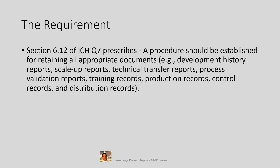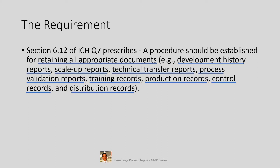Section 6.12 of ICH Q7 prescribes that a procedure should be established for retaining all appropriate documents. Examples include Development History Reports, Scale-up Reports, Technical Transfer Reports, Process Validation Reports, Training Records, Production Records, Control Records, and Distribution Records. The manufacturer should decide on appropriateness for additional such documents if required.